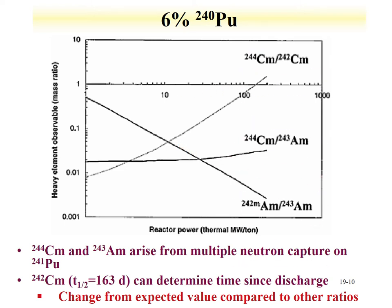Curium-242, with its half-life of 163 days, can also be used to determine time since discharge, since it changes relative to other ratios due to its relatively short half-life.